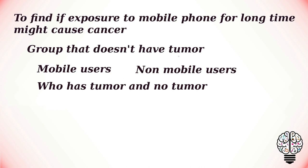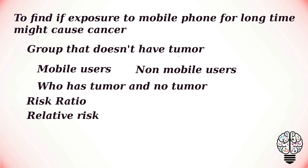We can use the risk ratio — the ratio of the incidence of disease in the exposed group to the incidence of the disease in the unexposed group — to compare outcomes. Relative risk quantifies the strength of an association between exposures and outcomes.